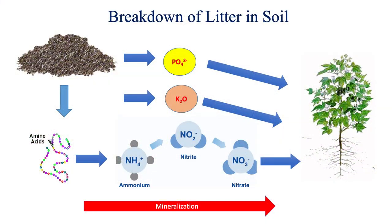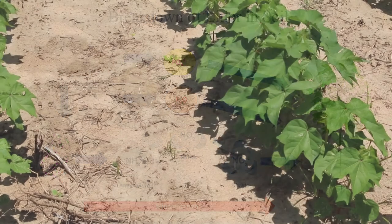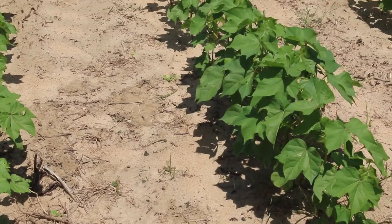Poultry litter is nutrient-rich — it can supply nitrogen, phosphorus, and potassium, along with other micronutrients. Many growers in the state apply litter when it comes to cotton production.